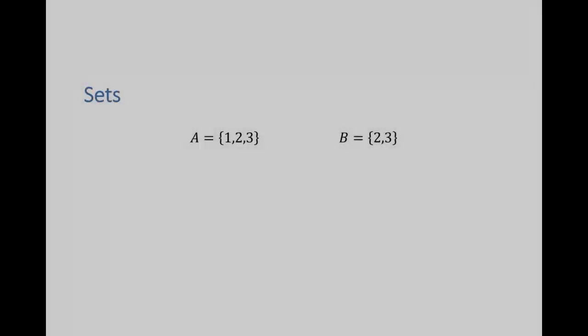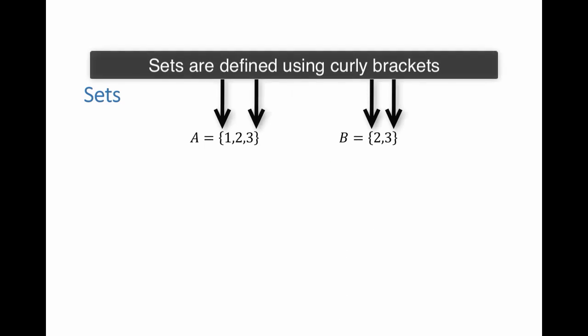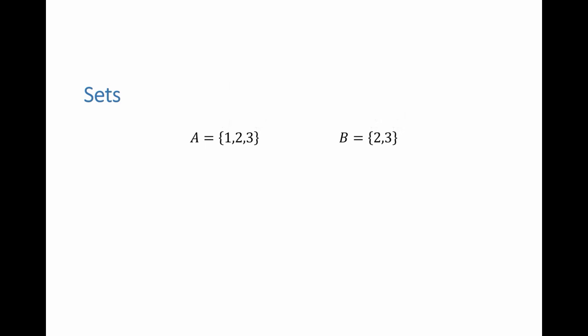In this first video, we are going to go through the mathematical symbols that we are going to be using in CV398. Sets are the building blocks of everything that we do. Sets are defined using curly brackets. For example, the set A is equal to the elements 1, 2 and 3. The set B is equal to the elements 2 and 3.